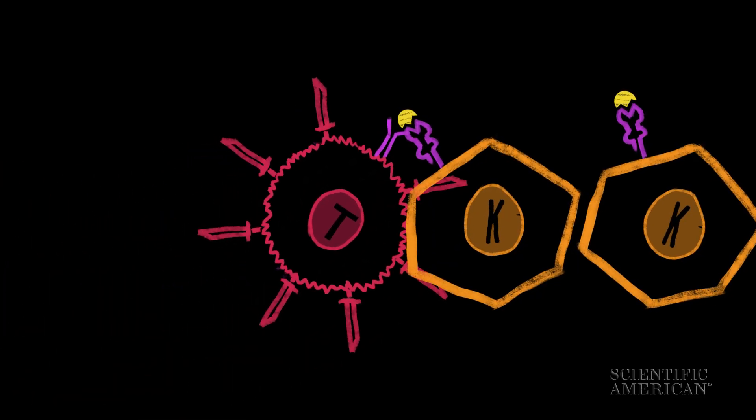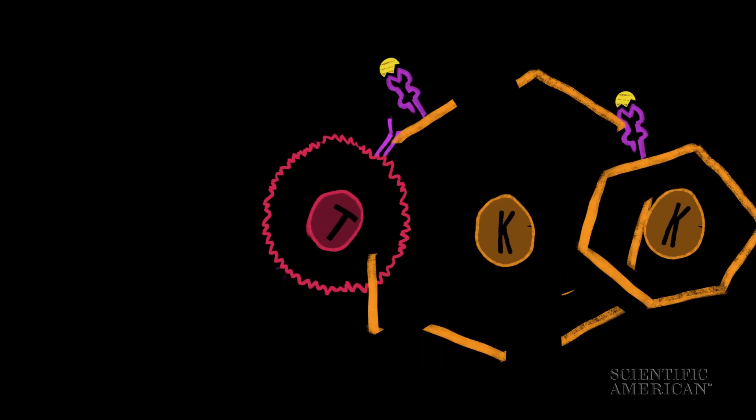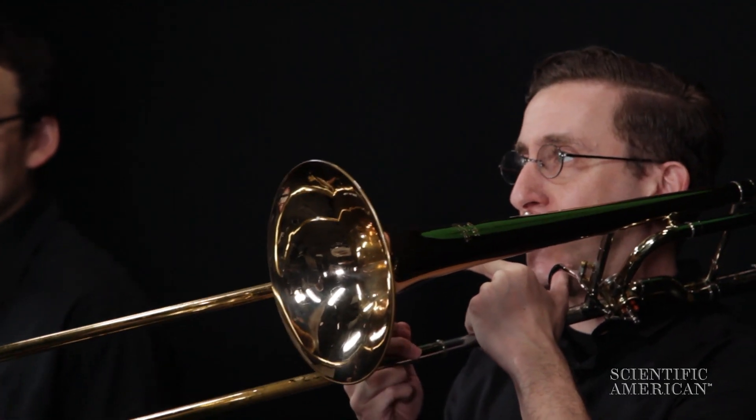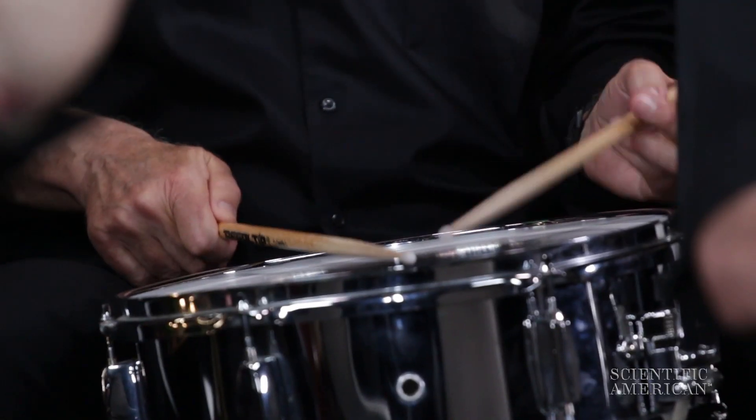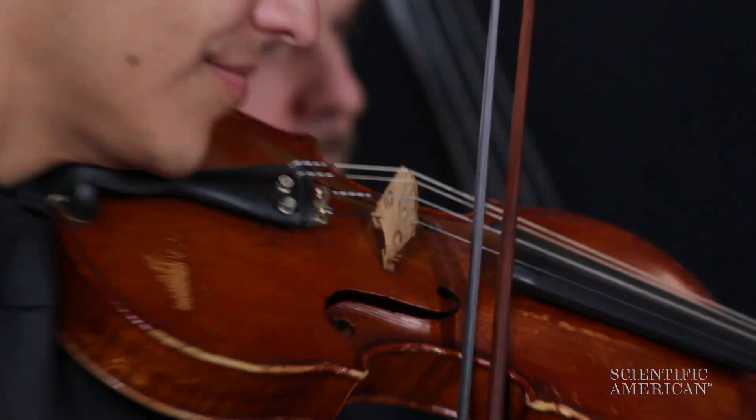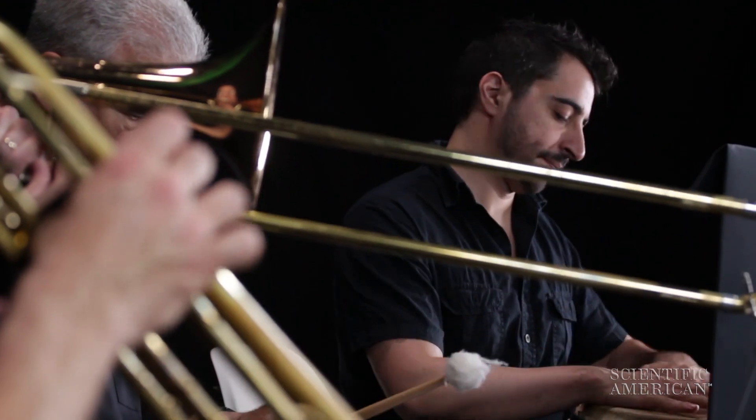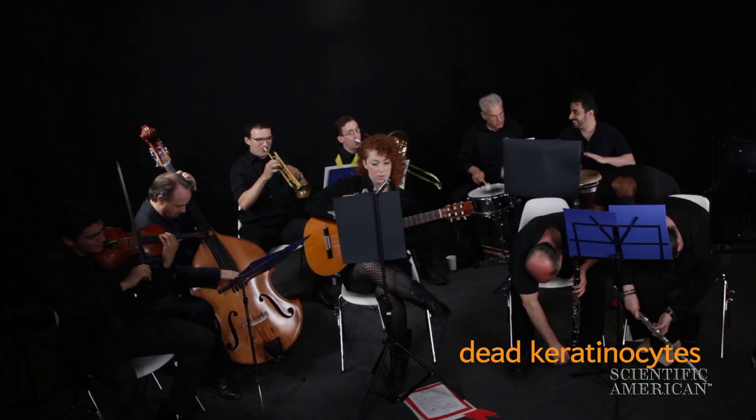When the killer T cells encounter their target allergen, they release their cytotoxins, delivering a lethal hit to the unfortunate skin cell. The cell's death destabilizes the tissue. The skin swells, itches, and blisters, and can take a few days or even a few weeks to rebuild itself.